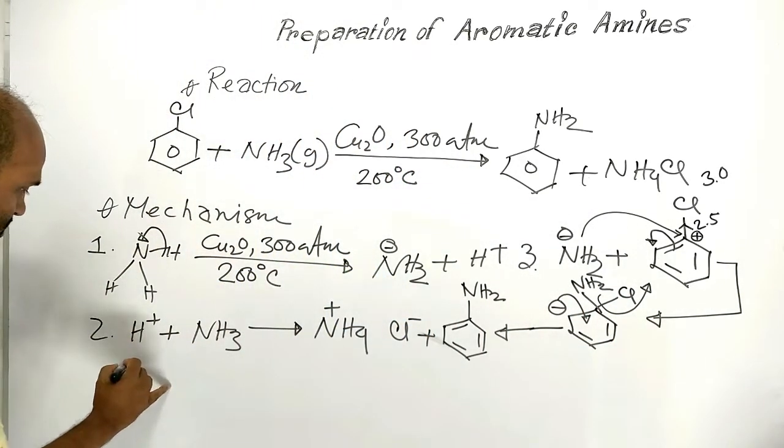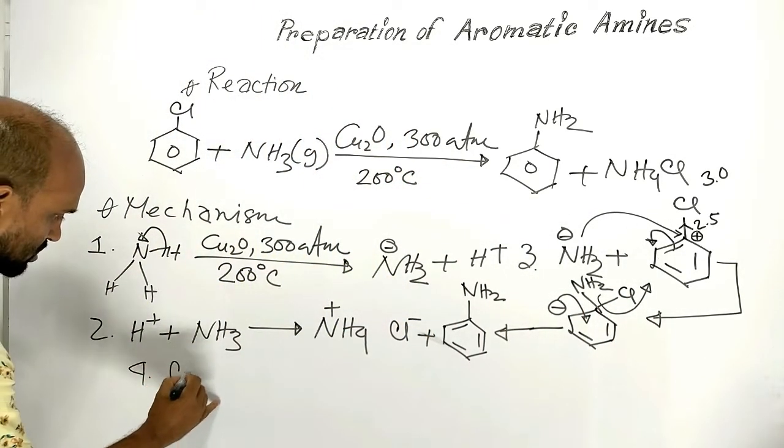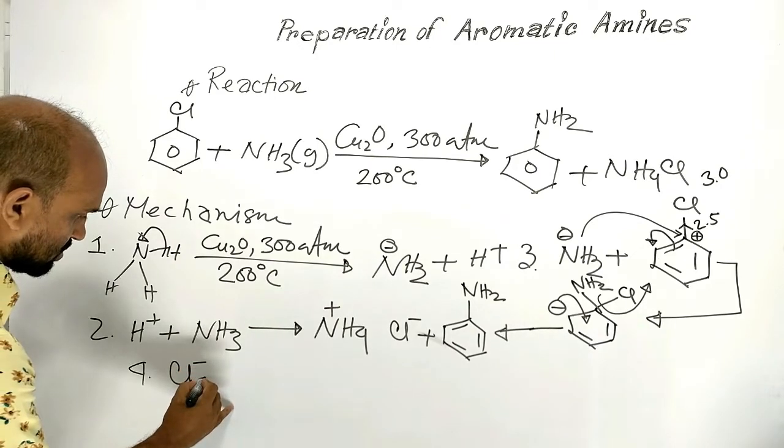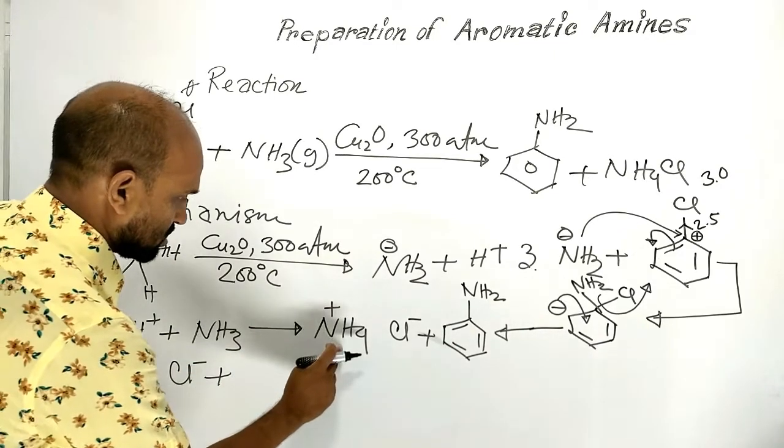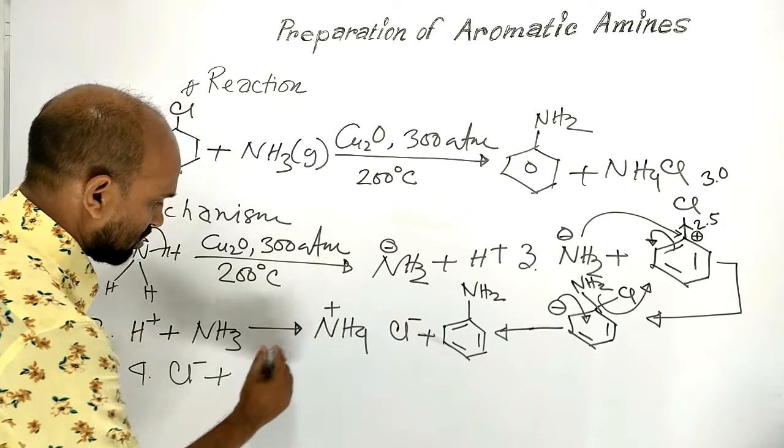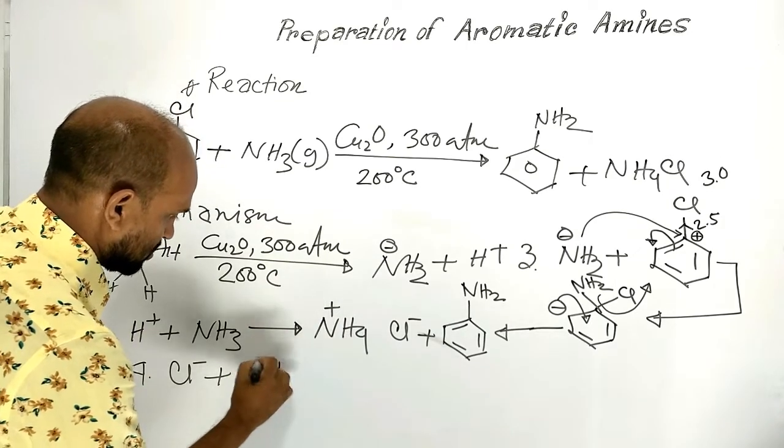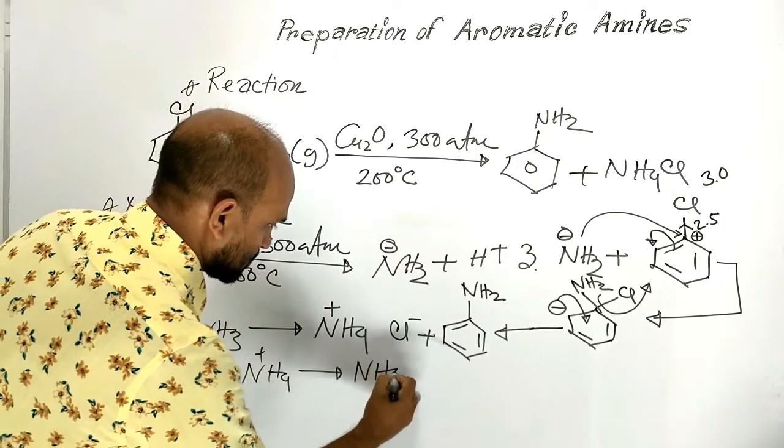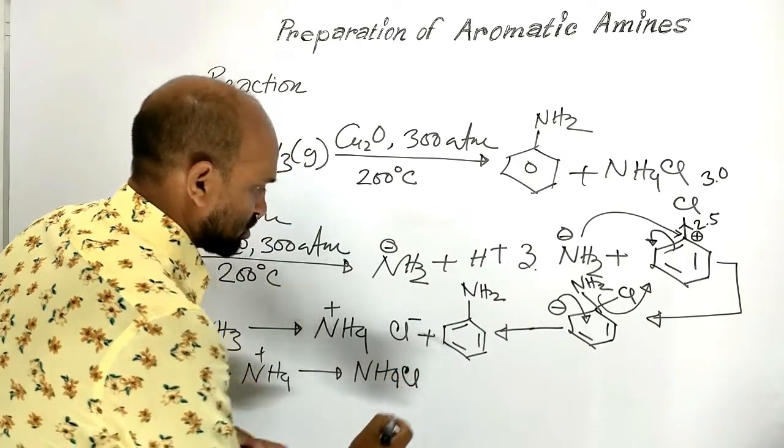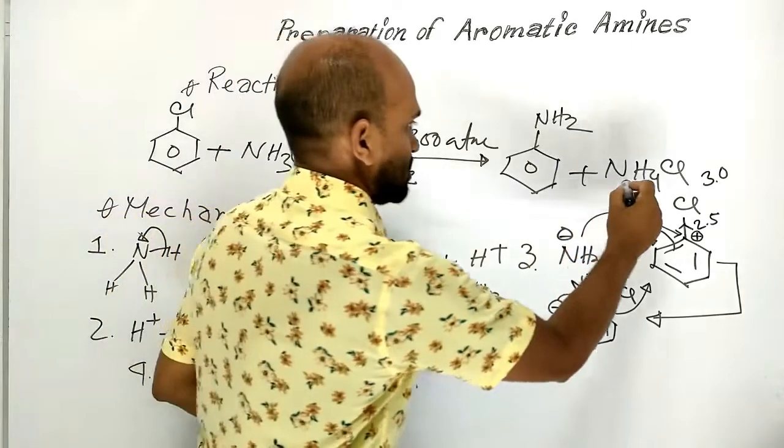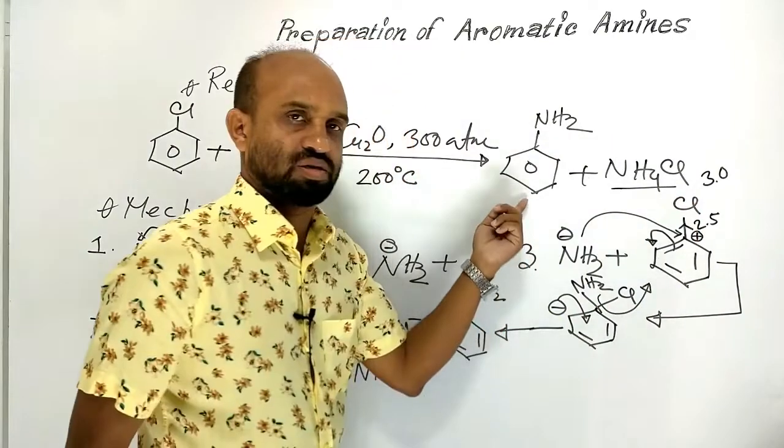And step 4: This chloride ion combines with this positively charged ammonium ion to form ammonium chloride, which is byproduct in the reaction.